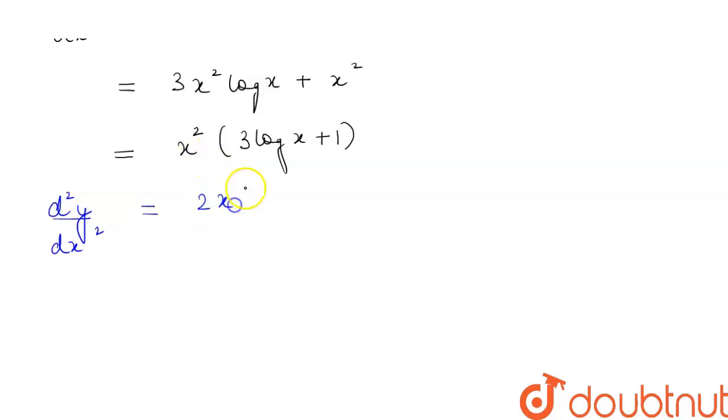times the derivative of (3 log x + 1), which is 3/x. The differentiation of a constant is 0.